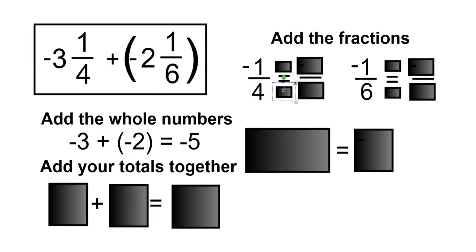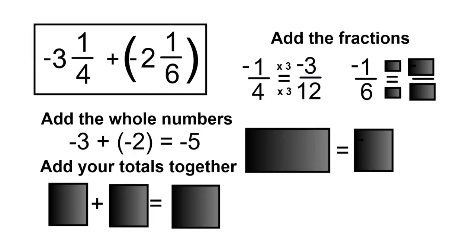So 4 times 3 is equal to 12. Multiply the numerator by 3, so negative 1 times 3 is negative 3. 6 times 2 is equal to 12, and then negative 1 times 2 is negative 2.